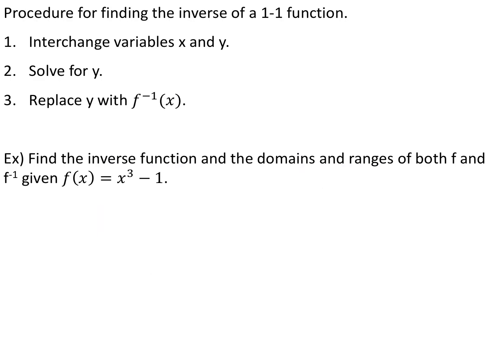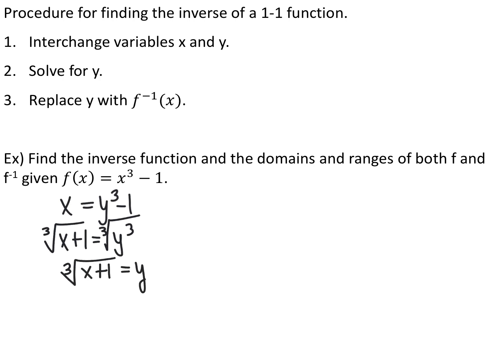To find an inverse function, there are three steps: first, switch your x and y; then solve for y; then label it as the inverse. For example, f(x) = x³ − 1: switch x and y to get x = y³ − 1. Solve for y by adding 1 to both sides, then taking the cube root of both sides, giving the cube root of (x+1) equals y. Label it: f⁻¹(x) equals the cube root of (x+1).